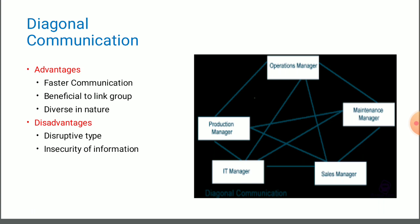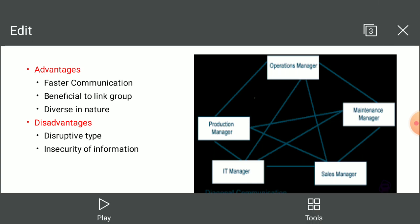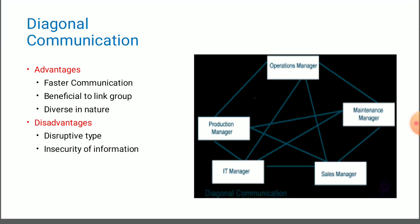The second advantage is beneficial to link groups. Because of this kind of freedom, they can create and link with their groups. Groups can be created and they can link within that particular group. The third advantage is that diagonal communication is diverse in nature. As there is no particular flow of information and they can contact with anyone, this is a great advantage of diagonal communication in business organizations.